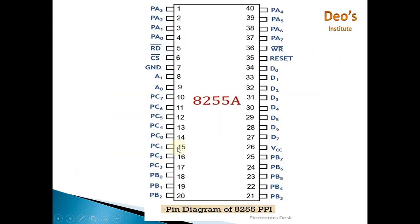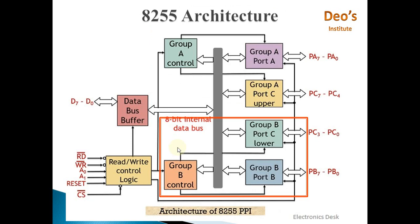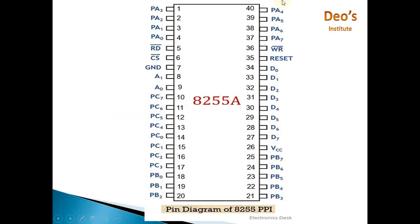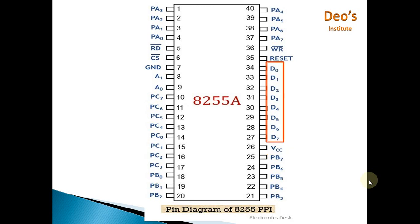Now we will see the pin description. 8255 is a 40-pin IC containing VCC and ground pins for power connections, and D0 to D7 bidirectional data pins used to connect 8255 to the processor for reading or writing data. Port A pins PA0 to PA7 are also bidirectional IO pins connected to the Port A buffer.